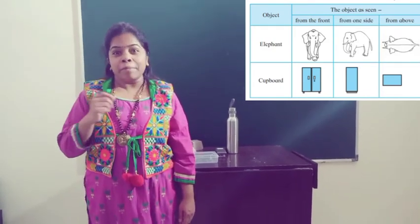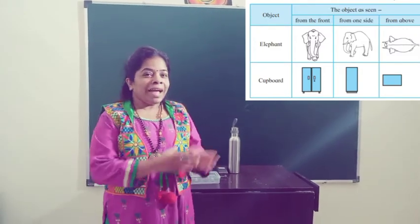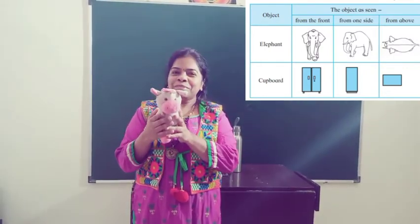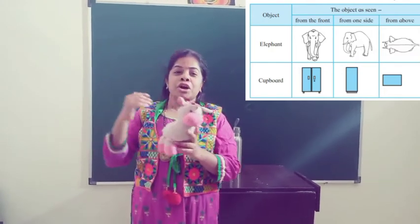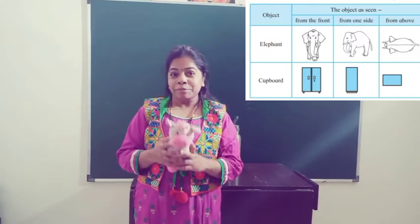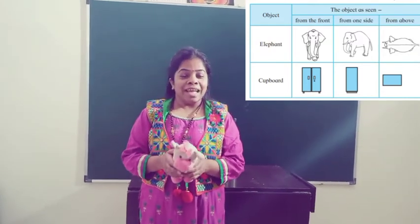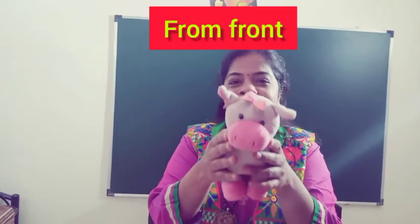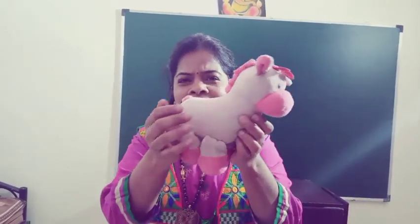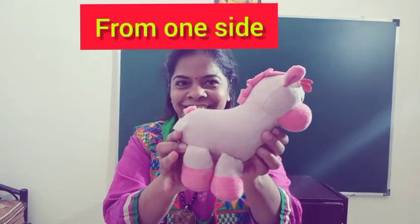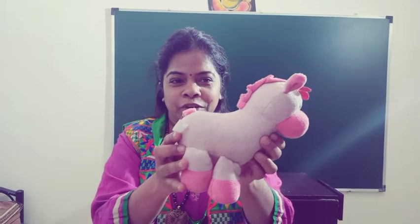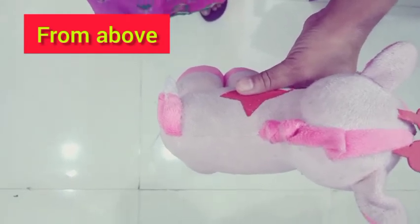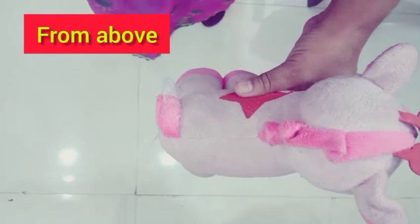We will try to understand this diagram through an object. I don't have an elephant, but we have a nice cow. With the help of this cow we will try to understand the picture of the elephant given in your textbook. If you see the elephant from the right, this is how it looks from the front. From one side, this is how it looks. And from up, this is how it looks — the same picture is shown about the elephant.